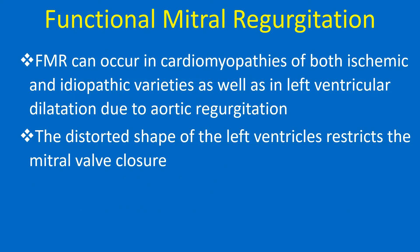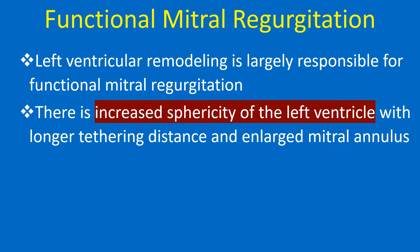Functional MR can occur in cardiomyopathies of both ischemic and idiopathic varieties, as well as in left ventricular dilatation due to aortic regurgitation. The distorted shape of the left ventricle restricts mitral valve closure. Left ventricular remodeling is largely responsible for functional mitral regurgitation, with increased sphericity of the left ventricle, longer tethering distance, and an enlarged mitral annulus.